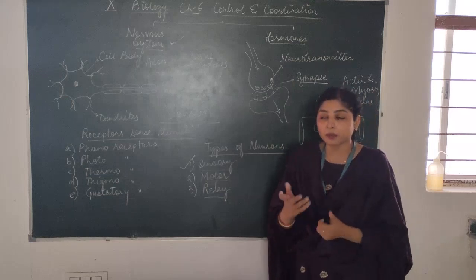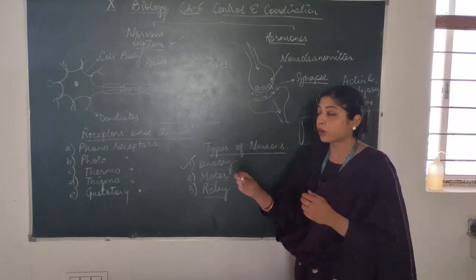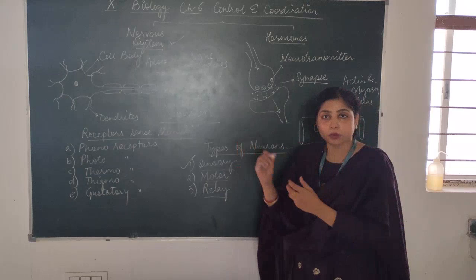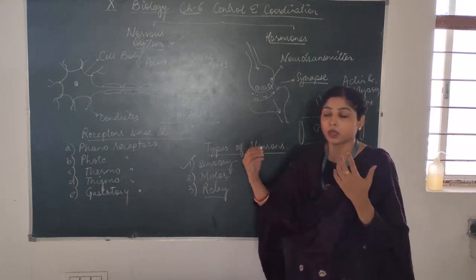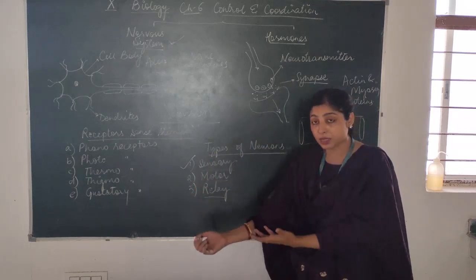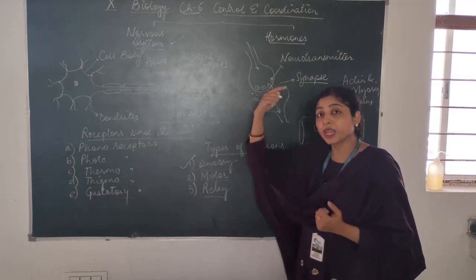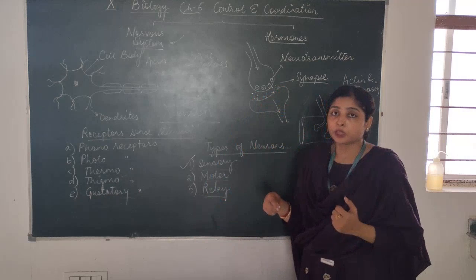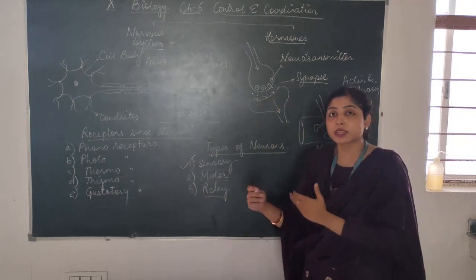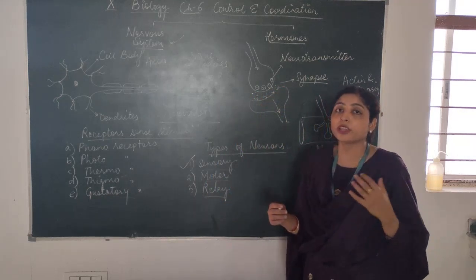Effectors, like for example, I want to pick this chalk up to write on the board. So my brain will tell my arm muscles to pick this piece of chalk and start writing. So the signal from the brain, the order comes to my muscles - we call them the effectors.